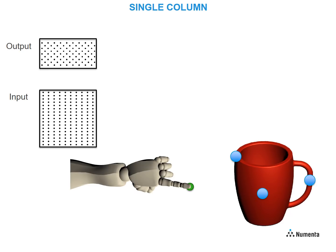We will first demonstrate inference with one column, and then how multiple columns cooperate to perform inference faster. On the left, you see a one-column network, with an input layer on the bottom and an output layer on top. We assume the network has already been trained on a set of objects. The green circle on the finger represents the sensor. The blue circles on the cup highlight the three areas where it's going to touch.